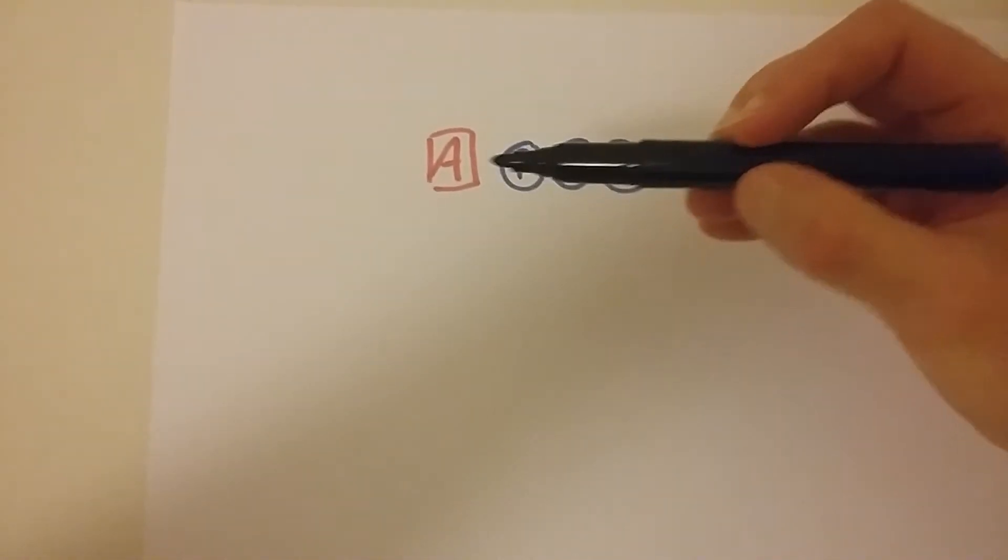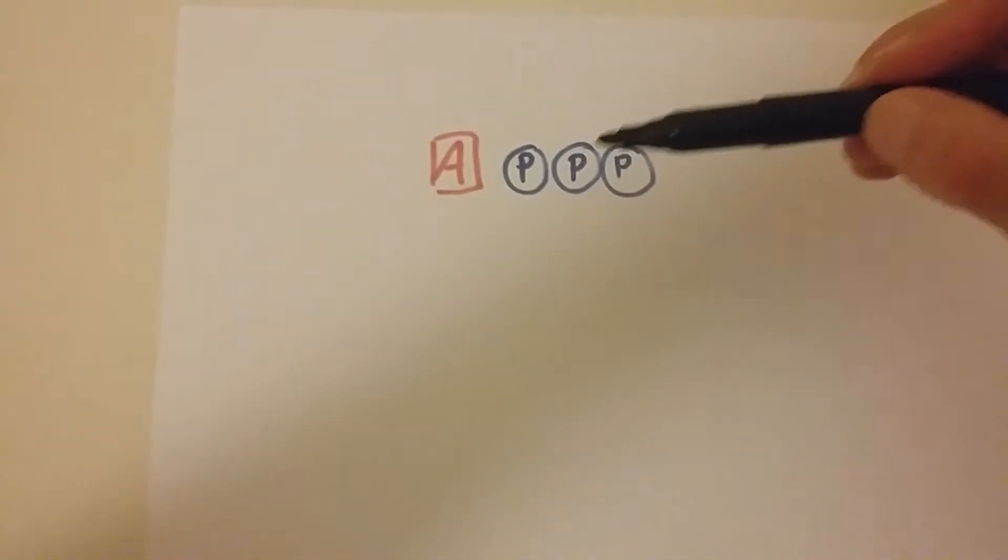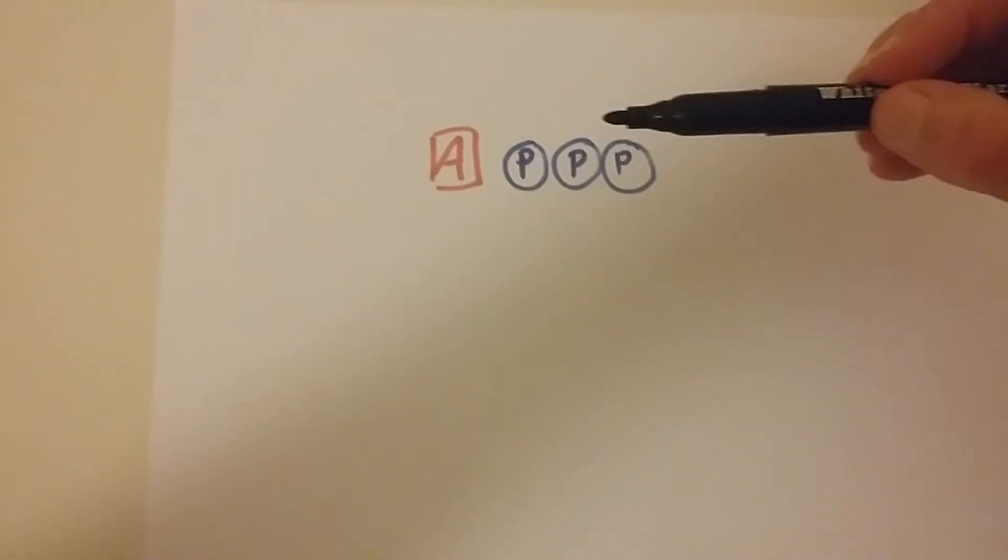So you would have come across ATP before. This is adenosine, so one molecule of adenosine and three lots of phosphate, so adenosine triphosphate.